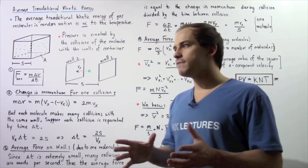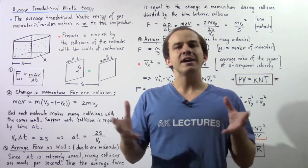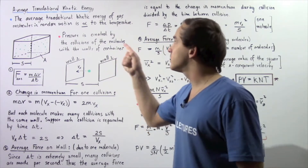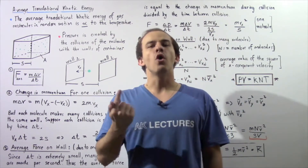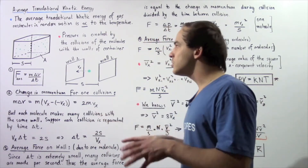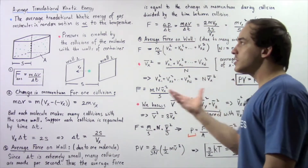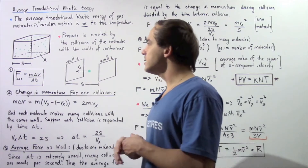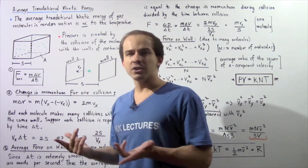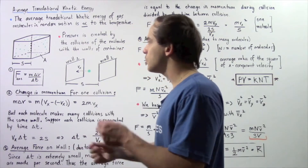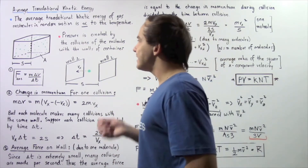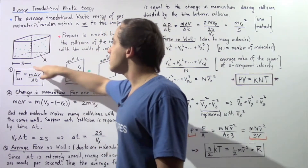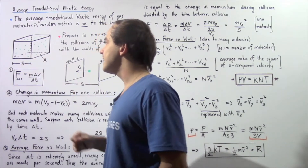So that basically means if we increase the temperature of our entire gaseous system, the average translational kinetic energy of the gas molecules will also increase. So let us actually derive this equation, this relationship in equation form. Let's begin with the following container. Let's suppose we have many different types of gas molecules inside our container moving back and forth. Let's suppose that the area of this face of our container is given by A and the length of this edge is given by S.